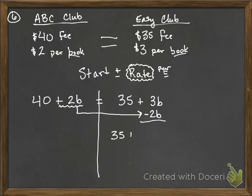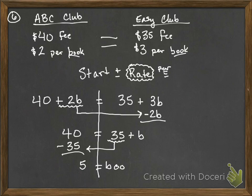So you have 35 plus 1B is equal to 40 since I moved the 2B over. And now I'm going to choose to move my 35 over here. So a positive 35 becomes a negative 35. And we're just left with 5 is equal to B. And B stands for books. So 5 books is when these will be equal to one another.